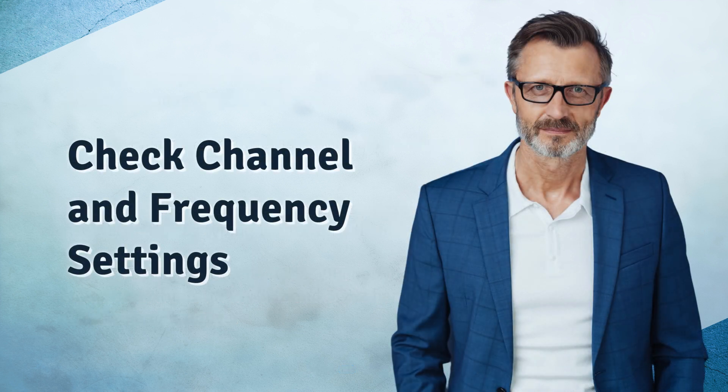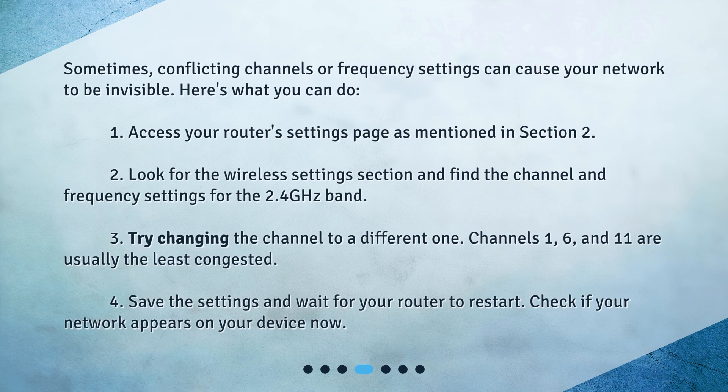Check channel and frequency settings. Sometimes conflicting channels or frequency settings can cause your network to be invisible. Here's what you can do: 1. Access your router's settings page as mentioned in section 2. 2. Look for the wireless settings section and find the channel and frequency settings for the 2.4 GHz band. 3. Try changing the channel to a different one — channels 1, 6, and 11 are usually the least congested. 4. Save the settings and wait for your router to restart. Check if your network appears on your device now.